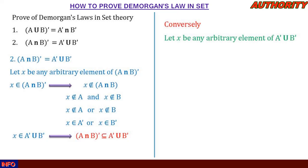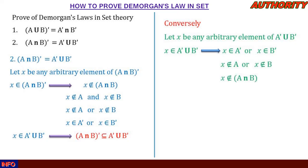Conversely, let x be an arbitrary element of the set A complement union B complement. So x exists in A complement or x exists in B complement. This implies that x is not in A or x is not in B. And if x is not in A or x does not exist in B, it shows that x is not in A intersection B.